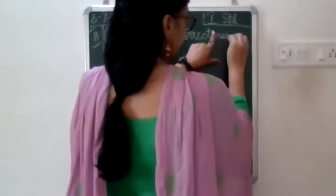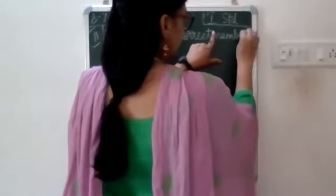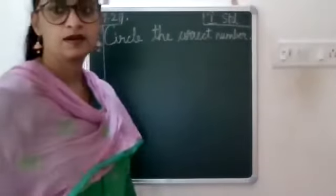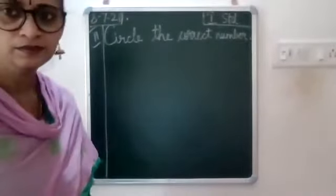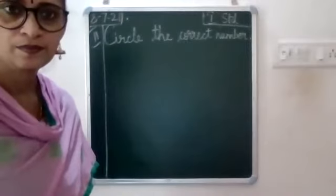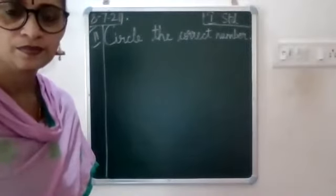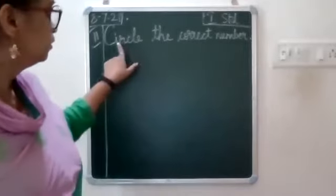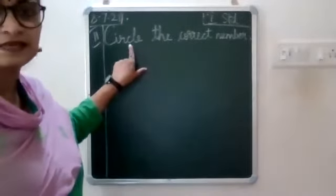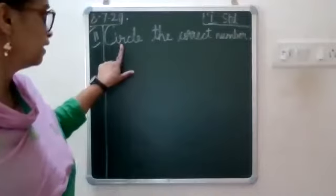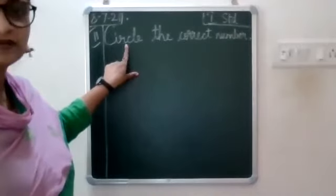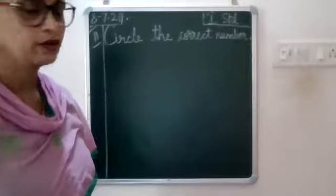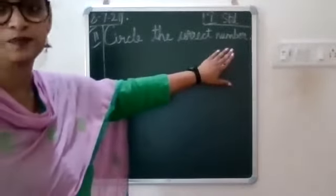And then write N-U-M-B-E-R, number. C-I-R-C-L-E — circle the correct number. Okay, circle the correct number.